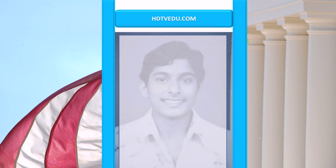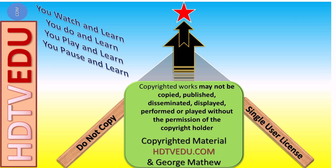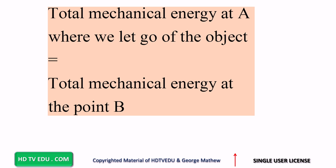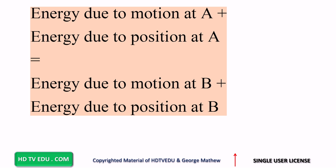Welcome to HDTVEDU.com — direct and simple education in seconds. Total mechanical energy at A, where we let go of the object, equals total mechanical energy at point B. What do we have at point A? It's all potential. What do we have at point B? All due to motion. So set the two equal and then solve for the speed. Energy due to motion at point A plus energy due to position at point A equals energy due to motion at point B plus energy due to position at point B.